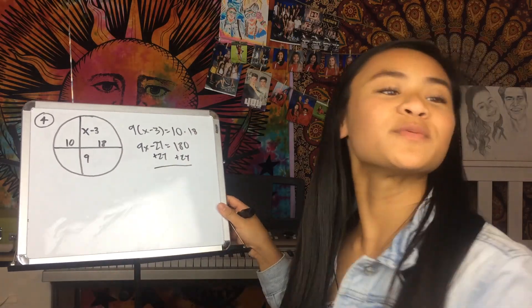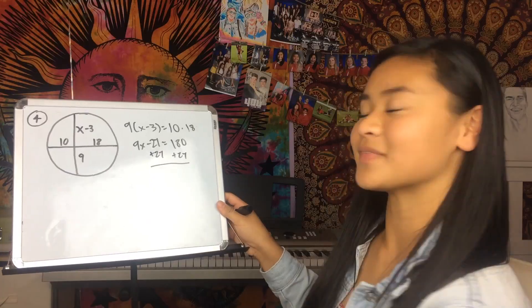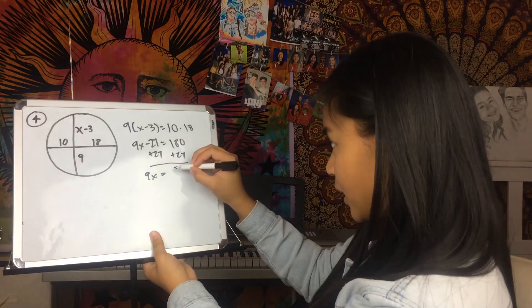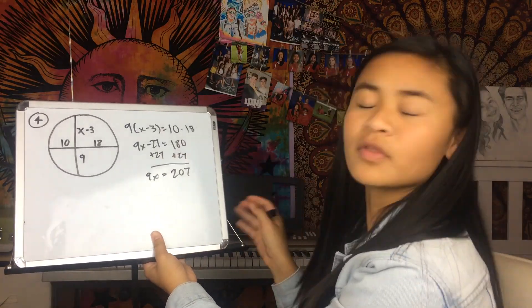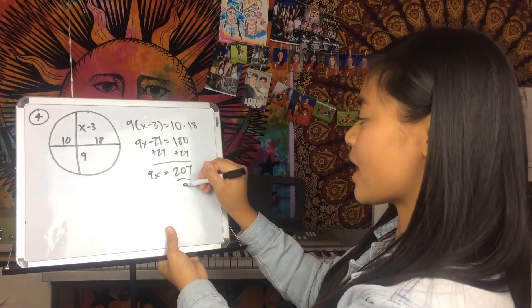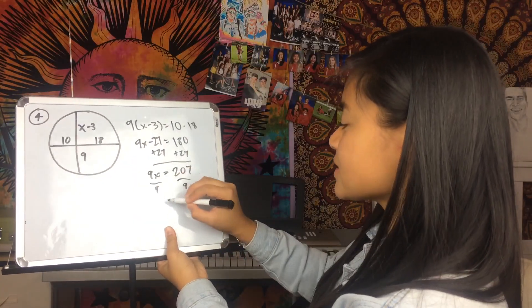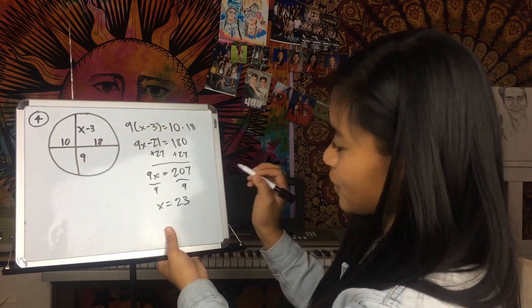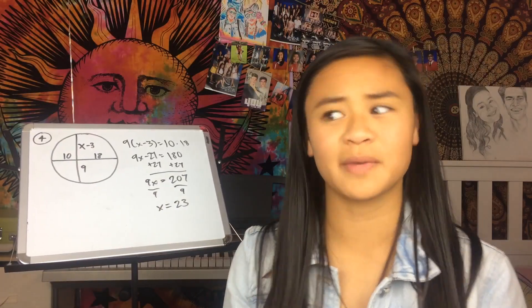Now what do we get? 9x equals 207. What do we do next? We divide by 9 — divide both sides by 9 — and x equals 23. You guys are such an amazing class! It's also a plus that you all look like me.